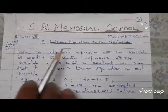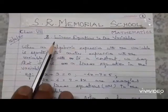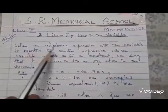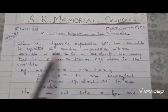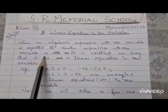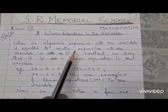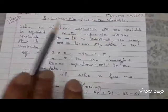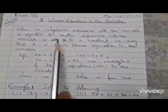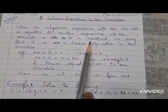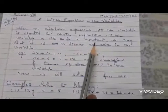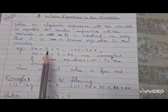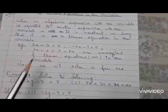Good morning students, today we will be starting a new chapter: linear equations in one variable. When an algebraic expression with one variable is equated to another expression with one variable or to a constant, and the expression has only one variable, we call this a linear equation in one variable.